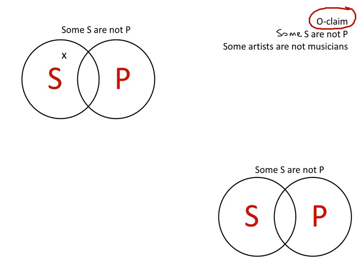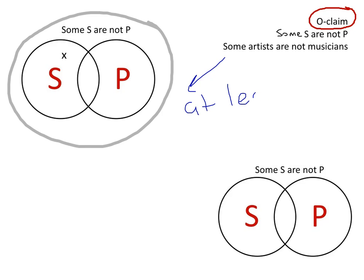Well, this is how we do it over here. So let's see how we get that. When we're talking about some S are not P, we're saying the some stands for at least one. Meaning, at least one member of the S class is not in the P class. At least one member of the S category is not in the P category.